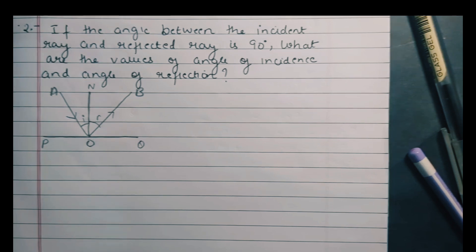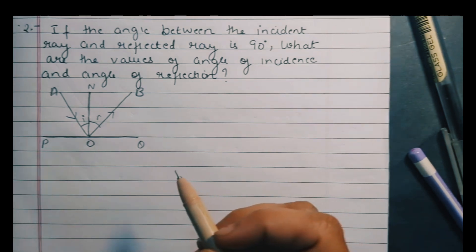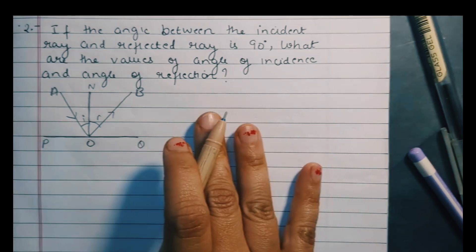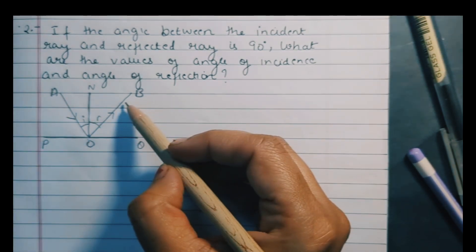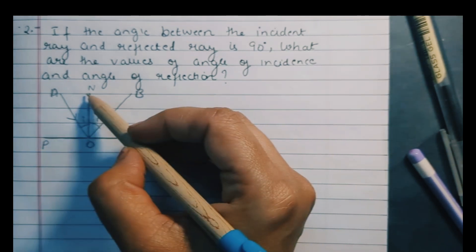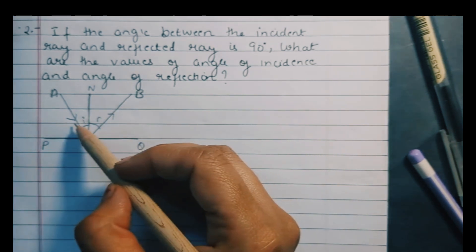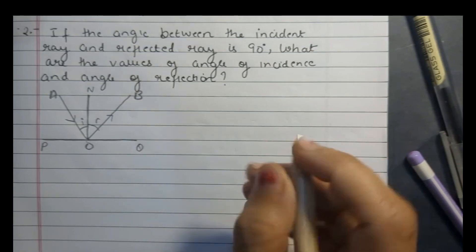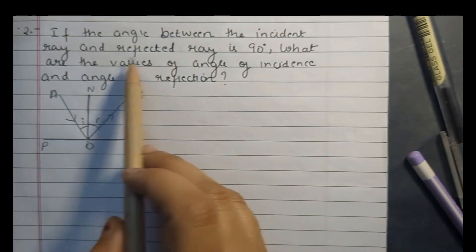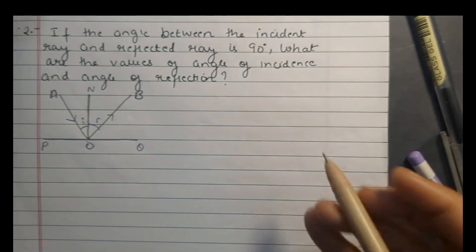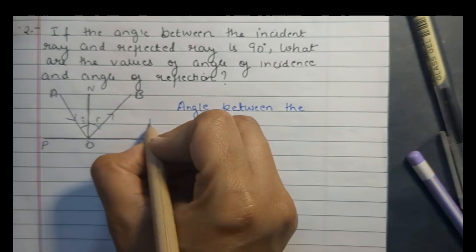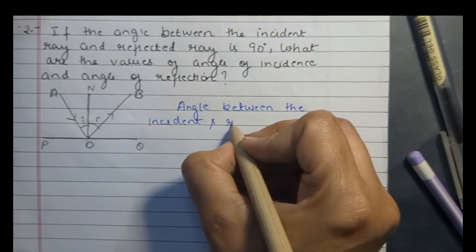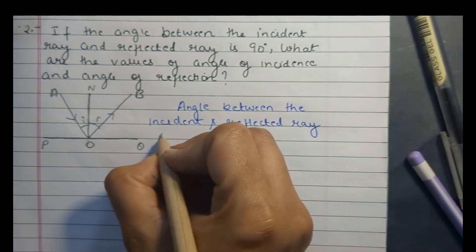The next question is: if the angle between the incident ray and the reflected ray is 90 degrees, what are the values of angle of incidence and angle of reflection? AO is the incident ray and OB is the reflected ray. Angle of incidence is angle AON and angle of reflection is angle NOB. According to the laws of reflection, these two angles are equal. The angle between the incident and reflected ray is 90 degrees.